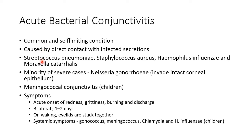The most common bacteria implicated in acute bacterial conjunctivitis are Streptococcus pneumoniae, Staphylococcus aureus, Haemophilus influenzae, and Moraxella catarrhalis. A minority of severe cases is caused by Neisseria gonorrhoeae, which has the ability to invade intact corneal epithelium. Meningococcal conjunctivitis occurs in children and is caused by Neisseria meningitidis.